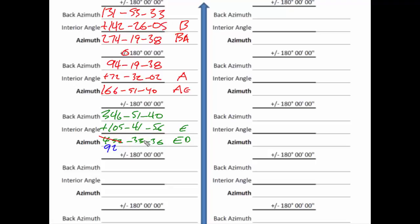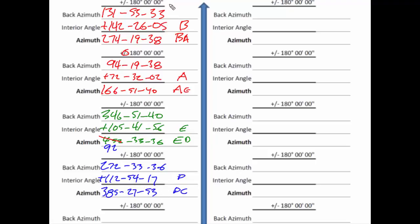Now we do our final check by applying our last interior angle at D to get the direction for DC. The back azimuth of 92 33 36 is 272 33 36, and then adding the interior angle of 112 54 17 gives an azimuth of 385 27 53. Since 385 is not a valid azimuth, we subtract 360 and get 25 27 53, which is the number we started with.